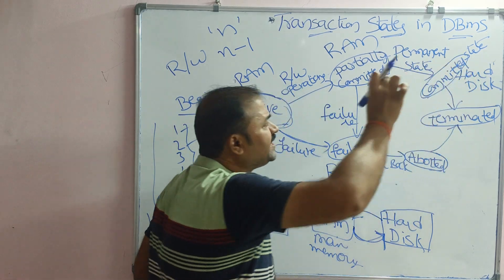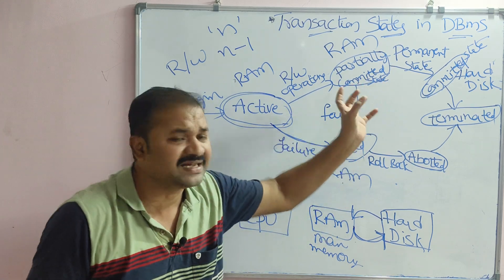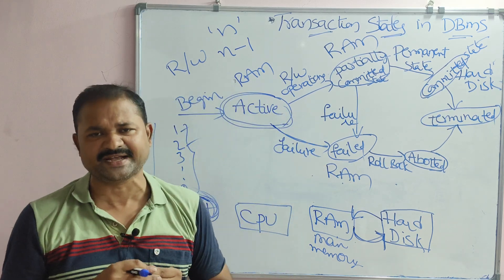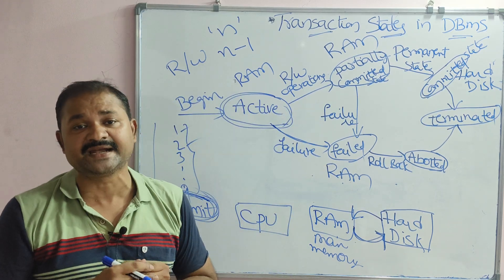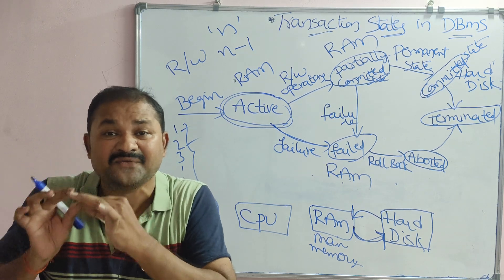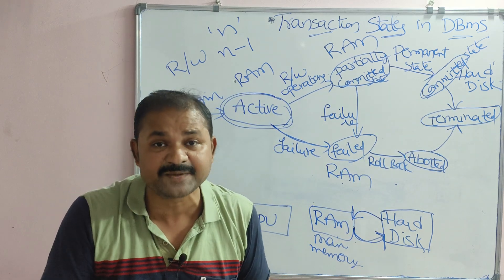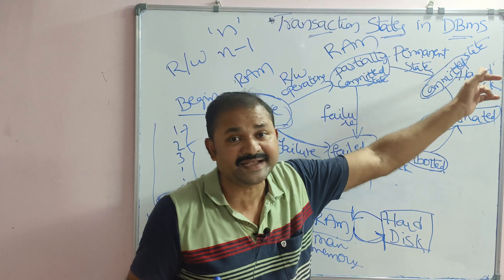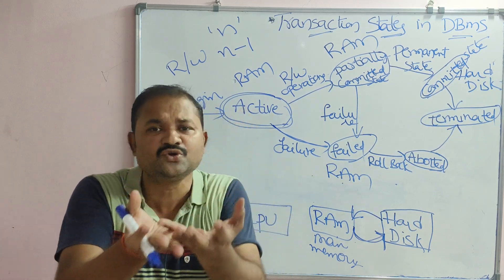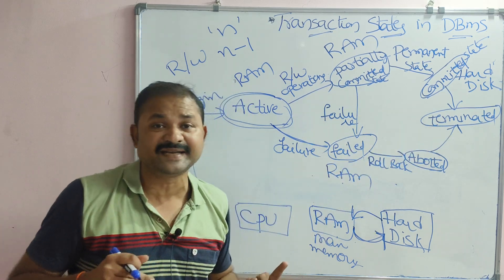Once the transaction is permanently stored in the hard disk, there is no need for additional resources. Resources such as files and I/O devices that were allocated for the transaction are now freed, and the transaction moves to the terminated state. Terminated state means the resources allocated for the transaction are released, making them available for other transactions.